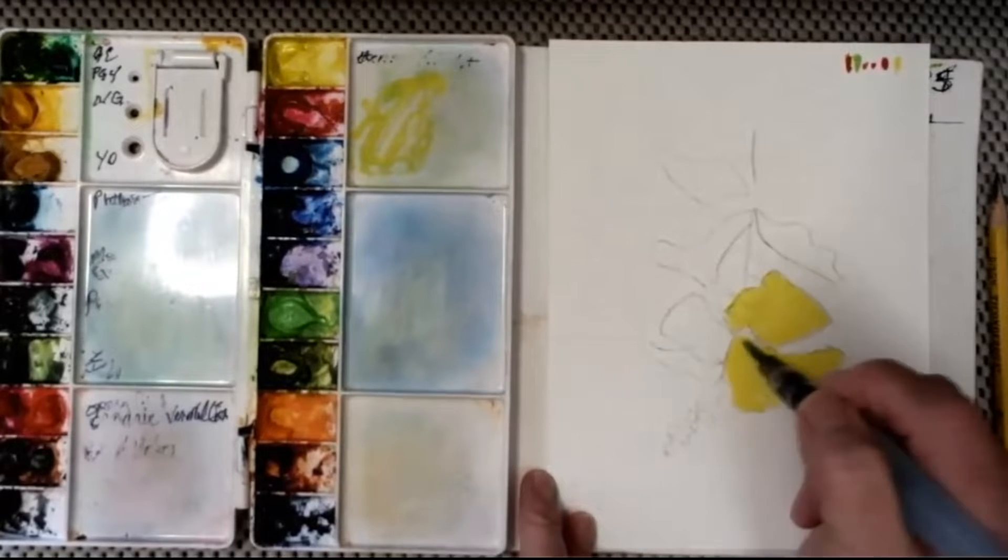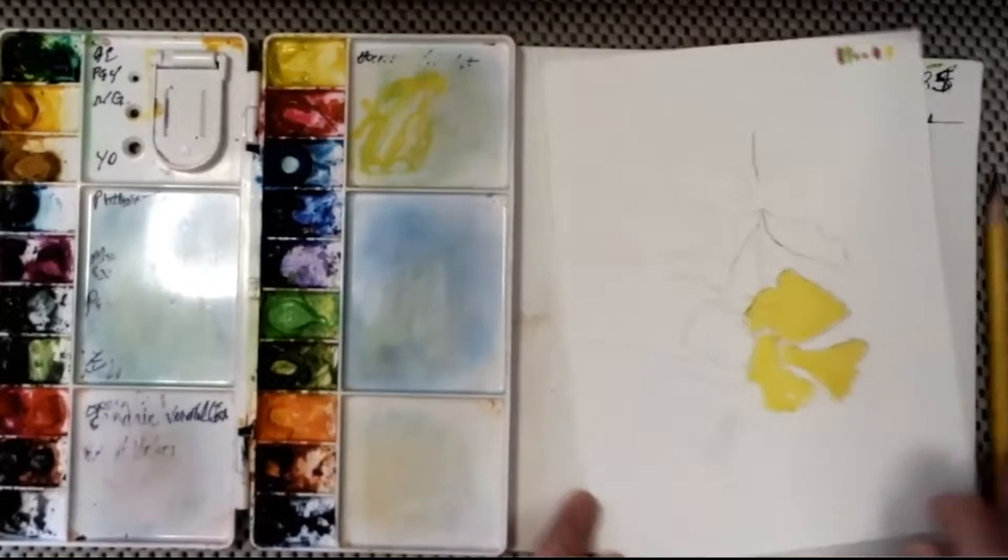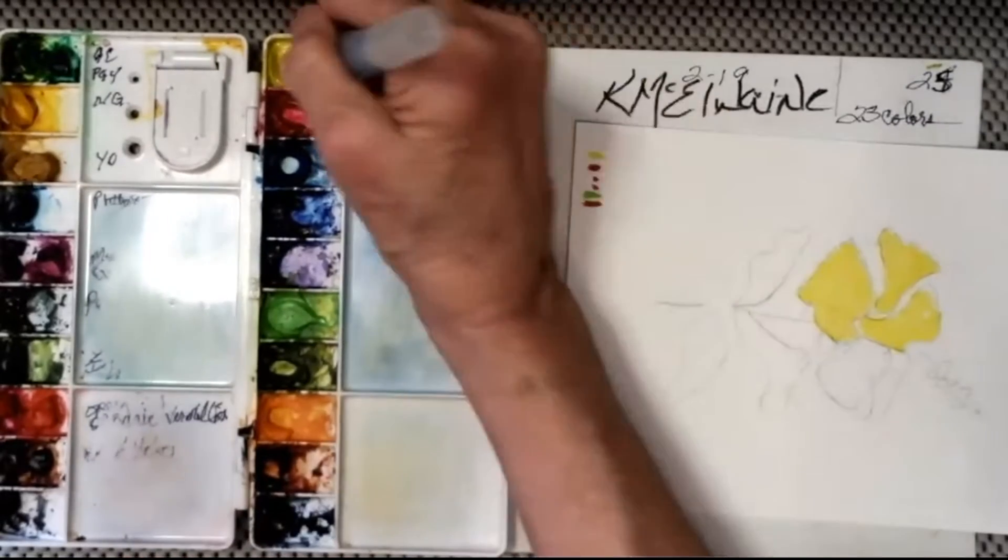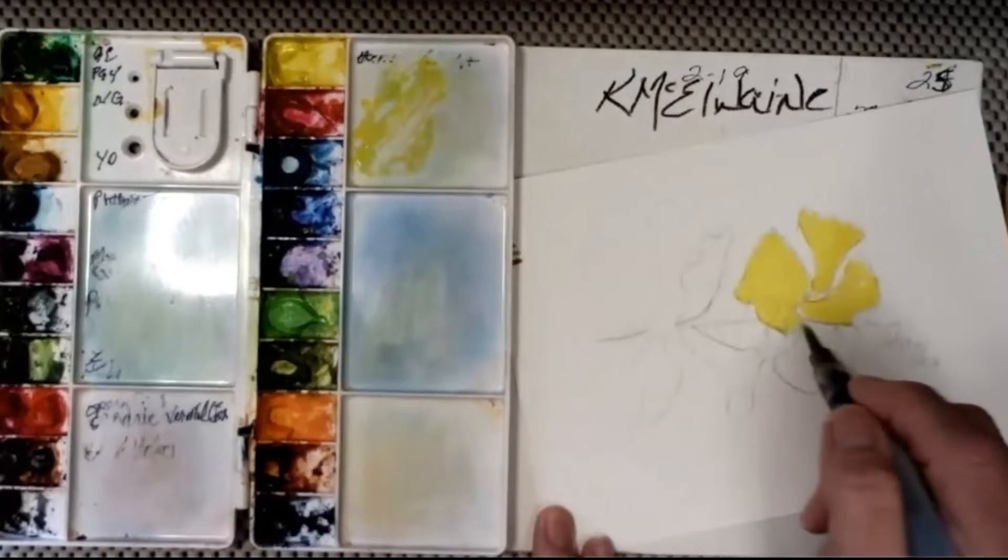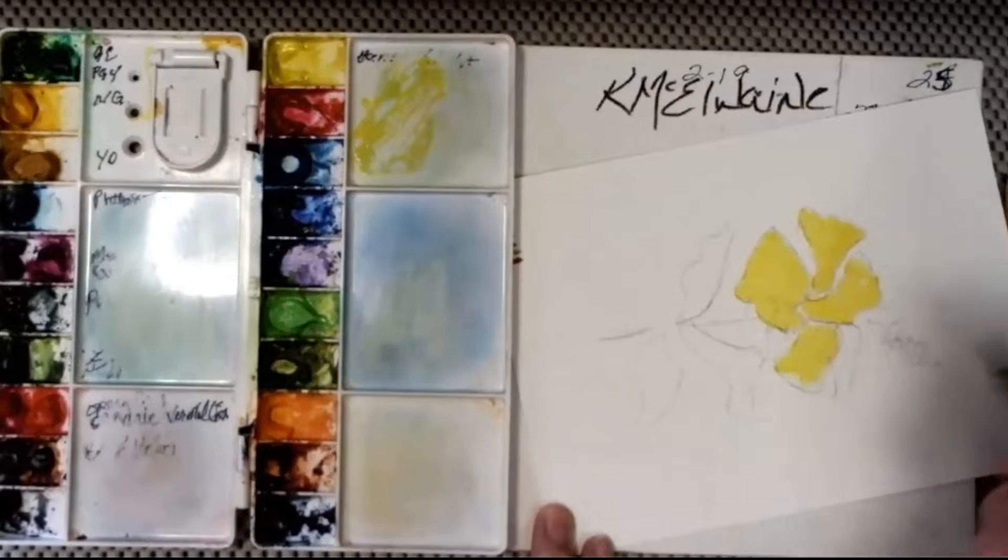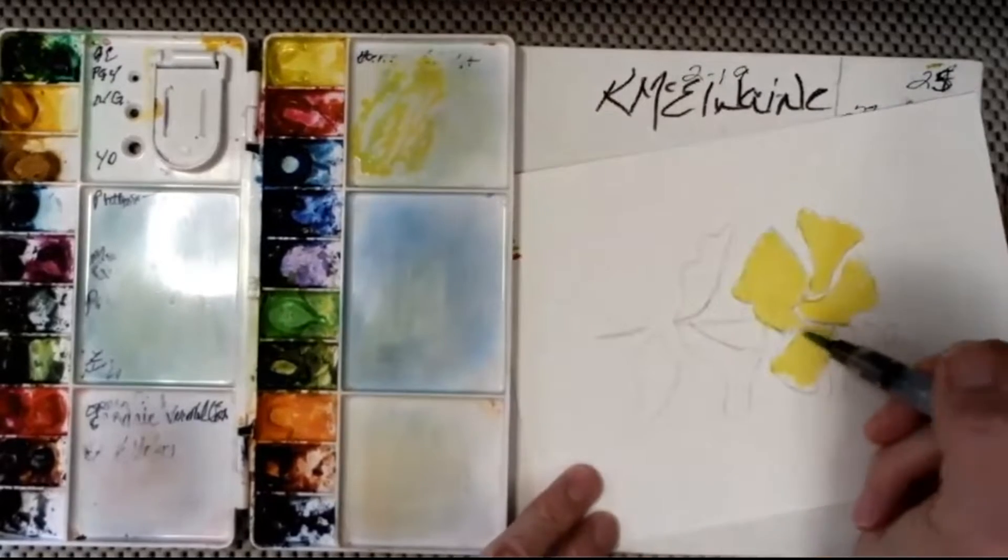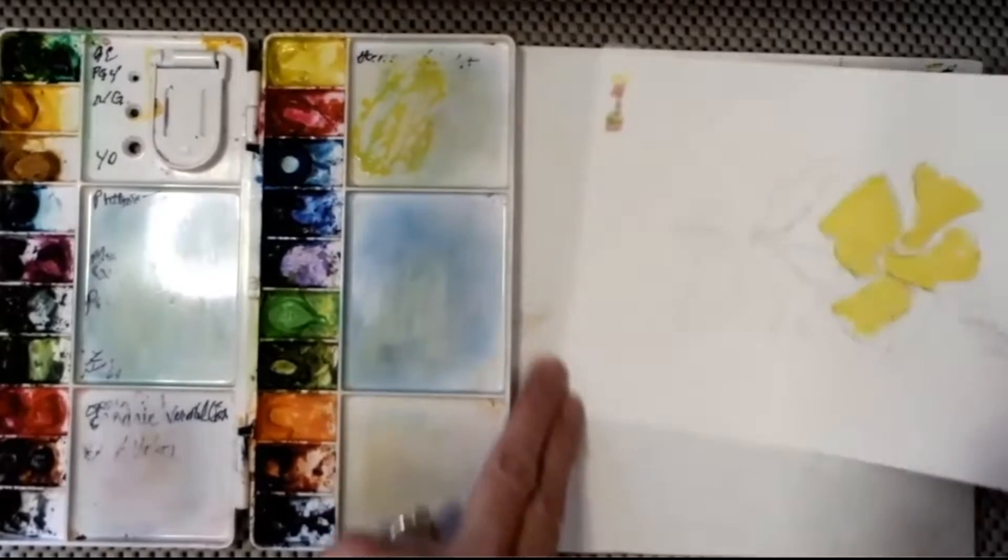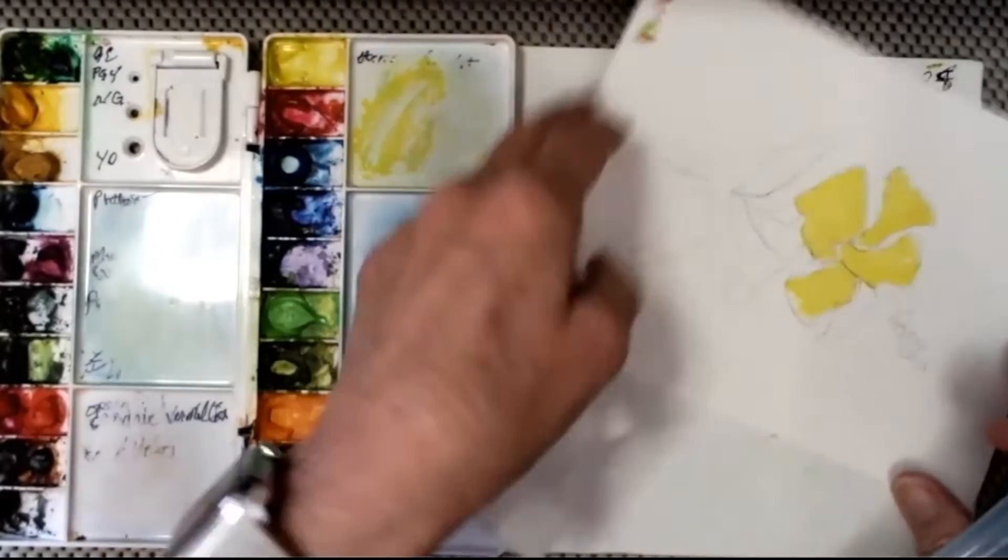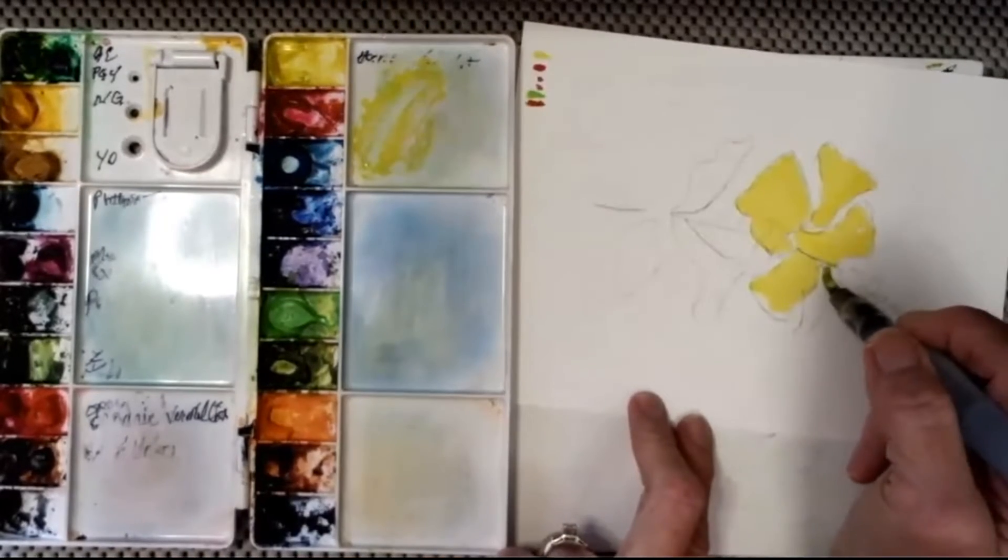I treat each petal separately so that I have white space in between the petals, which creates more brilliance with watercolor. It's the white that you can see through the color, the transparent watercolor paint, and it's the white next to it that creates the brilliance that watercolor paint will offer.